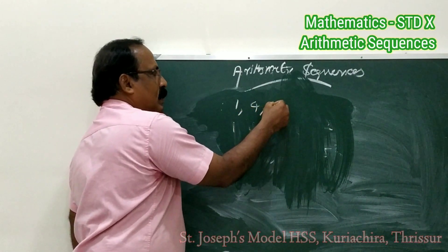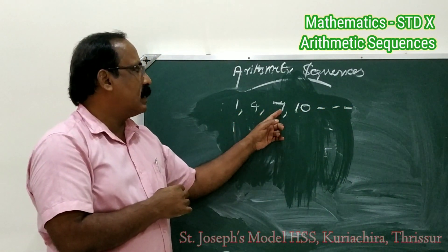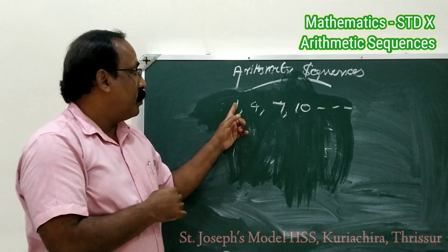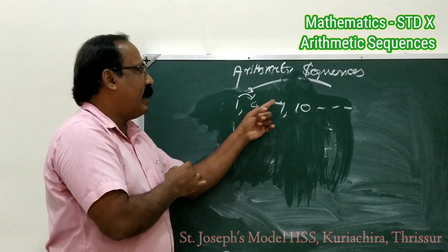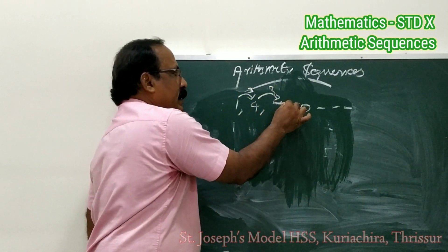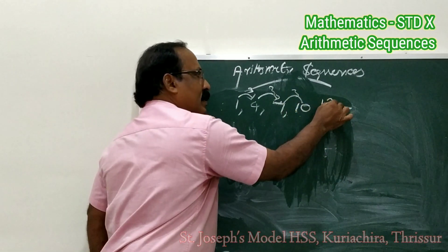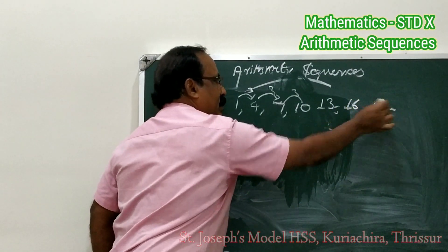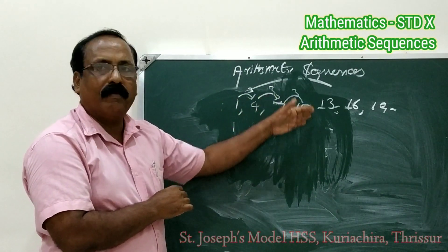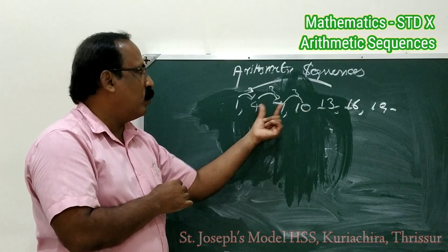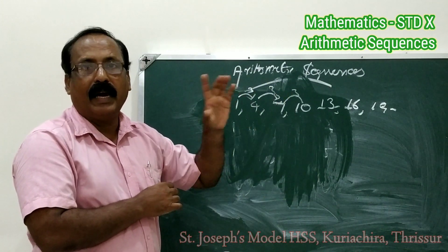Now what is an arithmetic sequence? That is our portion. Let us look at an example: 1, 4, 7, 10, etc. What is the difference between the first and second number? It is 3. The second and third difference is also 3. Third and fourth is also 3. What will be the next number? 13, then 16, 19, etc. This is an arithmetic sequence because a constant number is being added each time.